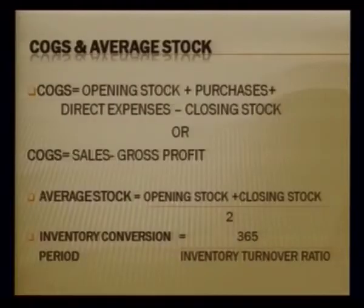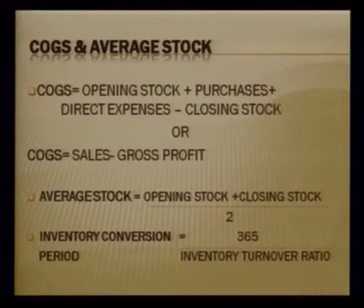Cost of goods sold is determined through the trading account. From the debit side it is: opening stock plus direct expenses plus purchases, minus closing stock. From the credit side it is: total net sales minus gross profit. Either approach gives the same value.